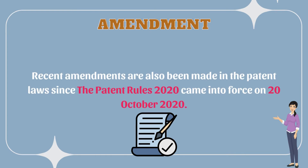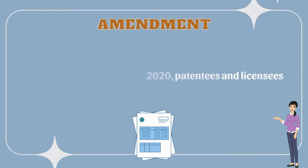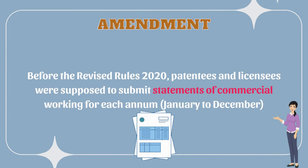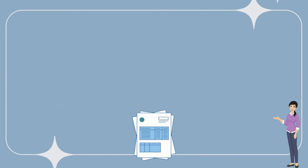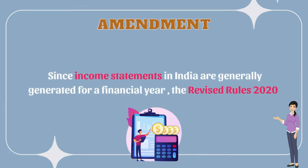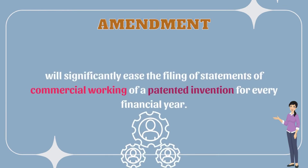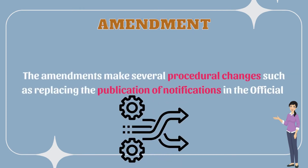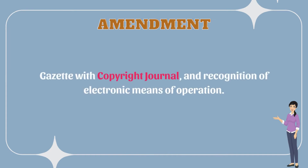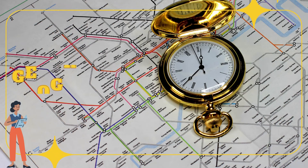Recent amendments have also been made in the patent laws since the Patent Rules 2020 came into force on 20 October 2020. Before the revised rules, patentees and licensees were supposed to submit statements of commercial working for each annum; since income statements in India are generally generated for a financial year, the revised rules 2020 will significantly ease the filing of statements of commercial working for every financial year. The amendments also make several procedural changes, such as replacing the publication of notifications in the official gazette with the copyright journal and recognition of electronic means of operation.